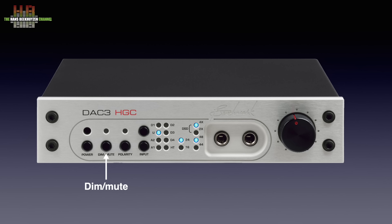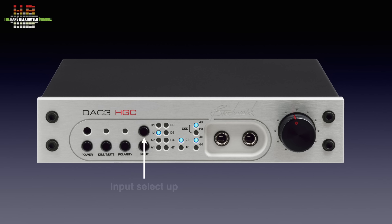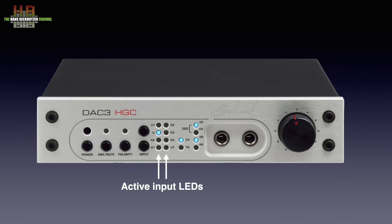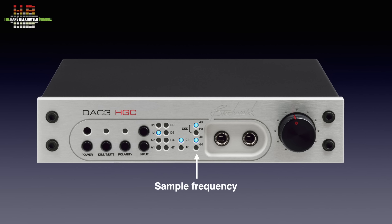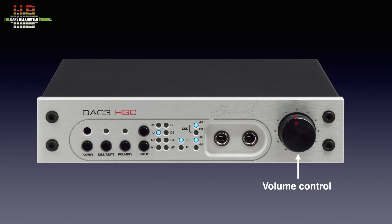Fixing the output level is useful if you prefer to use the volume control on your preamp or integrated amp. The polarity LED indicates the polarity as selected by the button below it — it reverses the polarity of the output, and is wrongly called phase on other DACs. Input-up and input-down allow you to step through the inputs, and inputs can be selected directly on the remote control. Two rows of LEDs indicate which input is active; two LEDs next to it indicate the bit depth, and four LEDs to the right indicate the sample rate and whether PCM or DSD is used. The motorized volume control operates both the analog volume for analog inputs and the digital volume for digital inputs. The digital version has a resolution of 32 bits, which is more than sufficient.